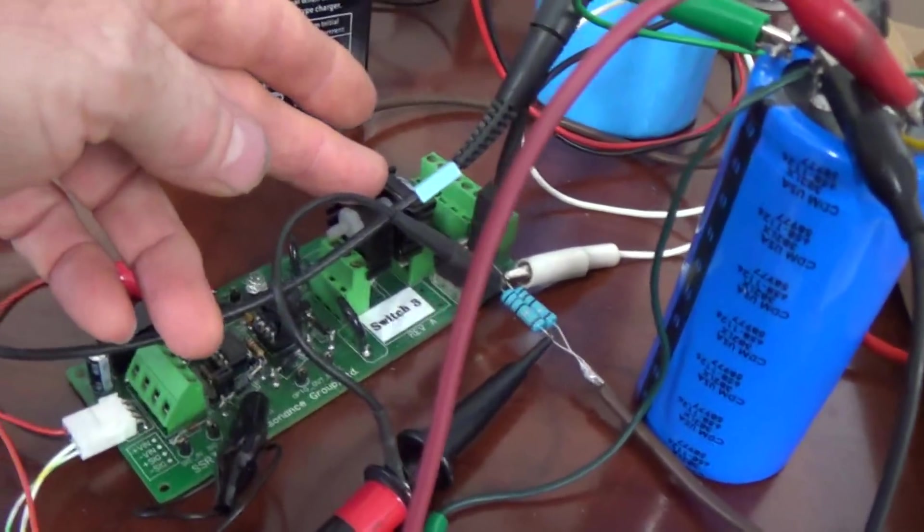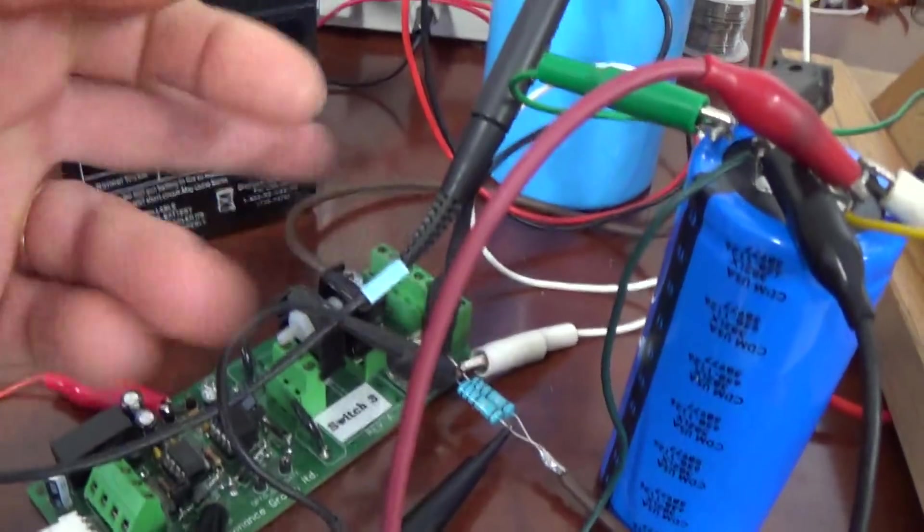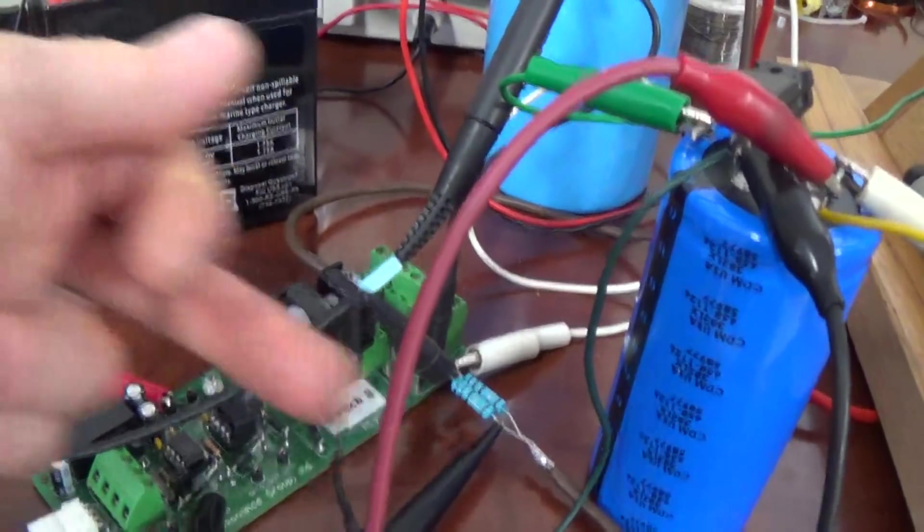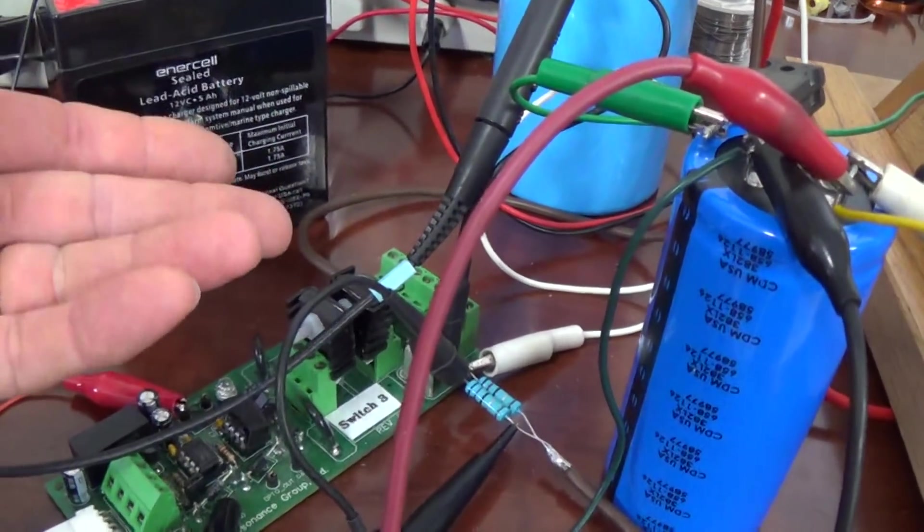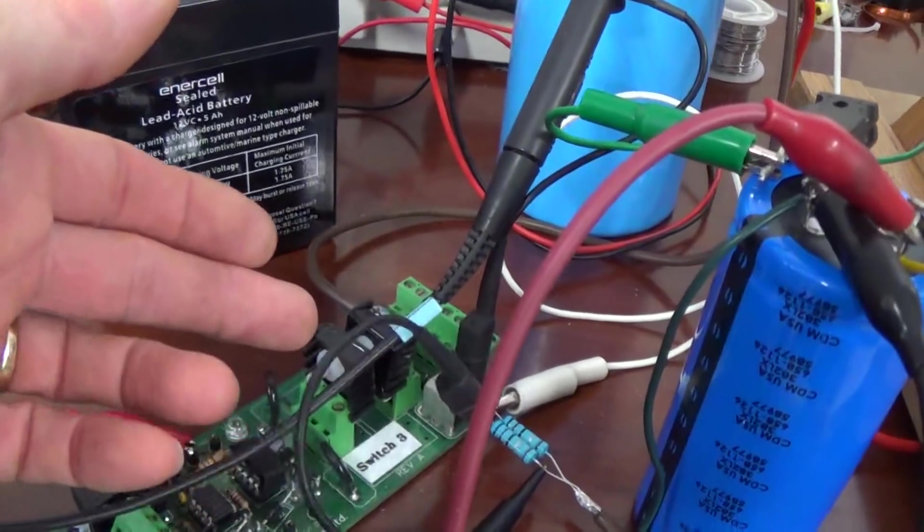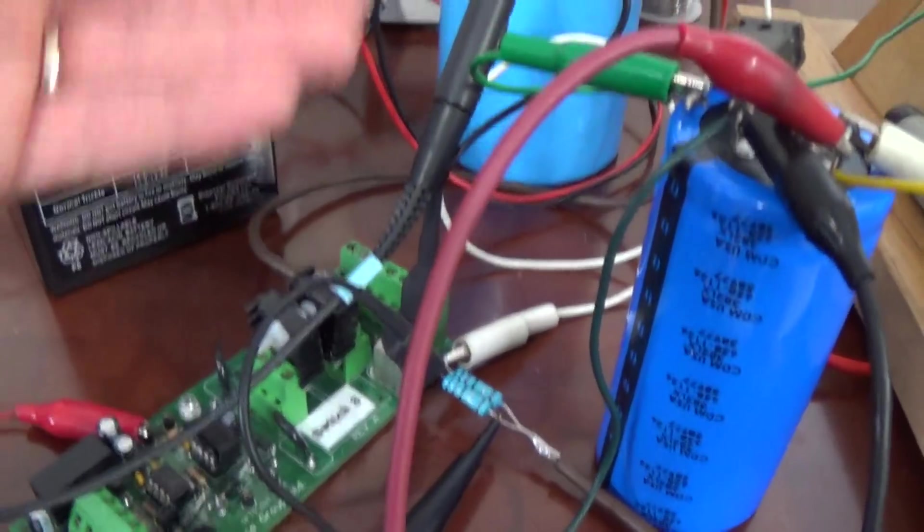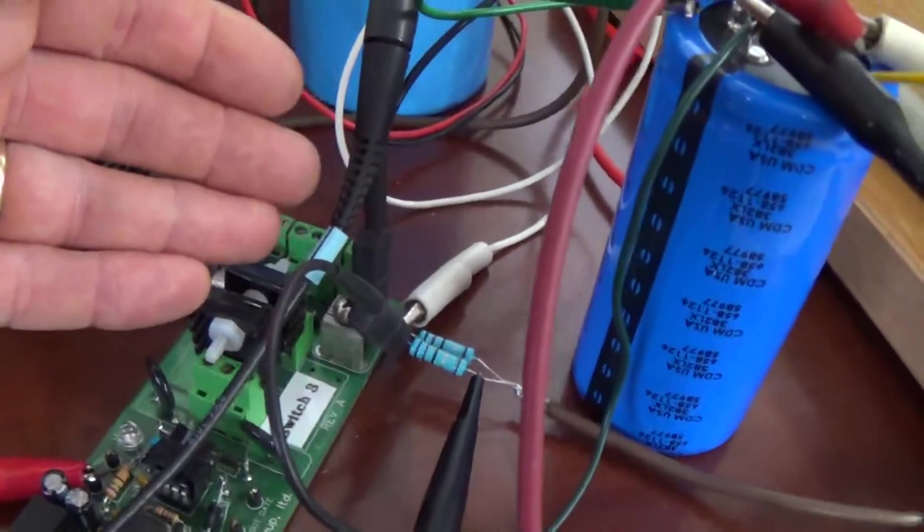Which is a double MOSFET configuration allowing the current to go in either direction, so taking current or returning current to the source. It can do that, very very low resistance on these. I can't stress more about this, really super low resistance is required.